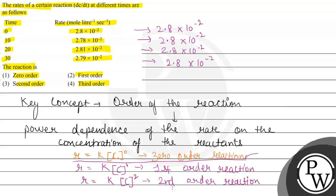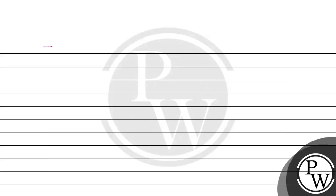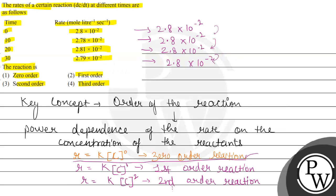Because the rate does not change with concentration, and the rate — which is the change in concentration with respect to time — is constant, this is an example of zero order reaction. Therefore, the order of reaction is zero, and the answer is option one, which says zero order. Options two, three, and four are incorrect. Hope you understood it well, best of luck.